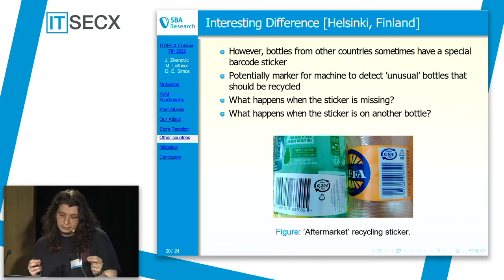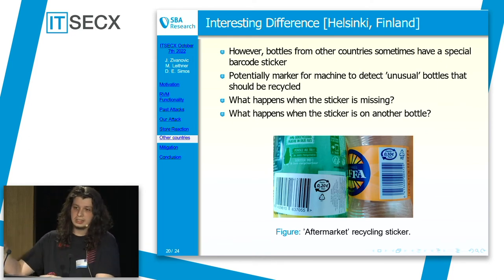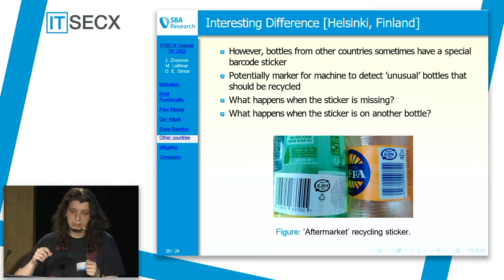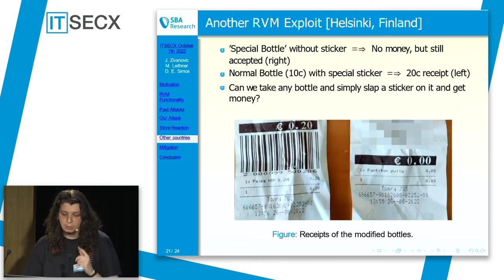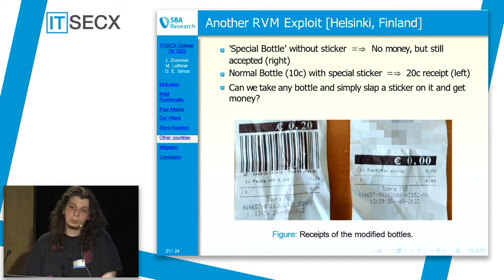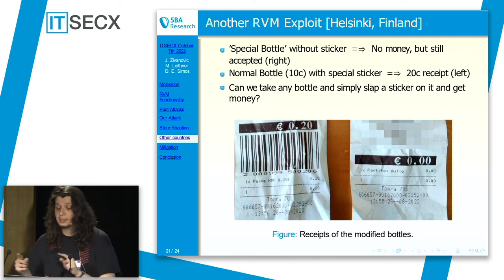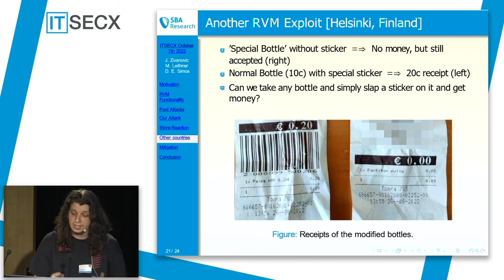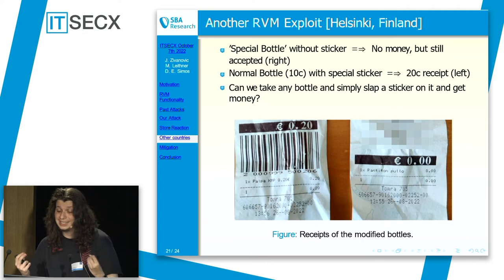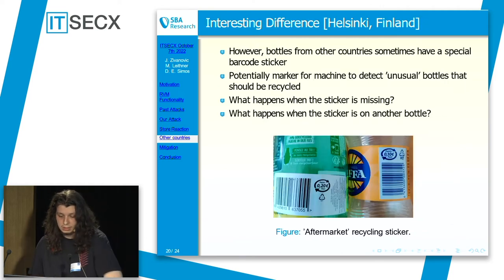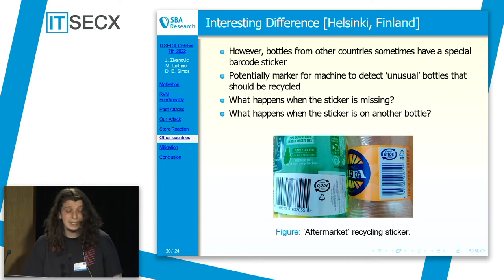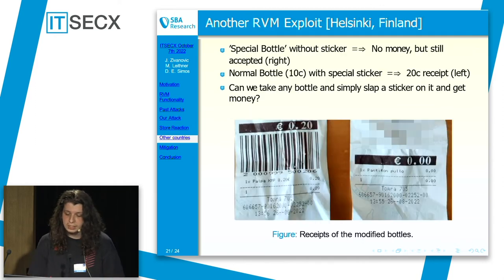So what happens if you take this barcode and put it on a 10-cent bottle and return both of them? The bottle without the sticker — which has the Estonian barcode printed on it — is worth zero to the machine. However, the 10-cent bottle with the 20-cent sticker is worth 20 cents, which leads me to believe you can take this sticker, copy it a bunch of times, put it on 10-cent bottles — or potentially bottles not even accepted — and get more money for it.